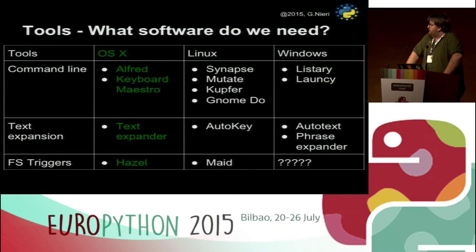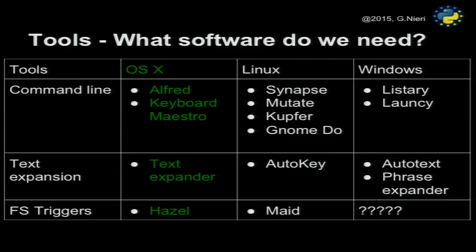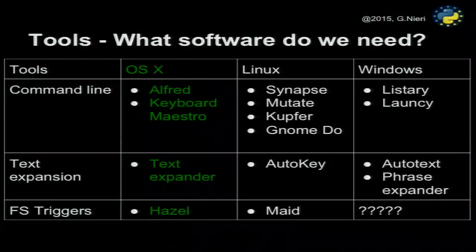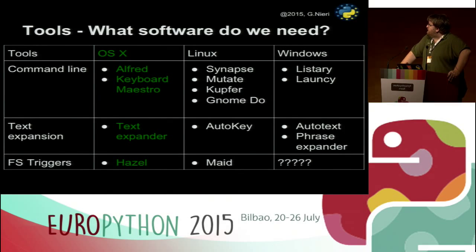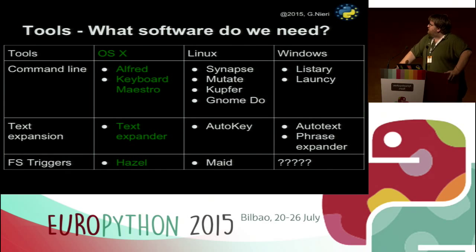What software do we need? I'm a Mac user, so I'll show tools for OS X — the green column — but I've written a table showing there are alternatives for Linux and Windows, and the approach is quite the same. You have command line utilities, text expansion utilities, and file system triggers for Linux and Windows. Once you understand the parameters and best practices, you can develop the same scripts on Windows or Linux. For command line, I'll show you two tools.